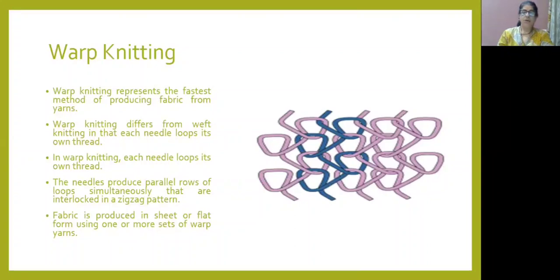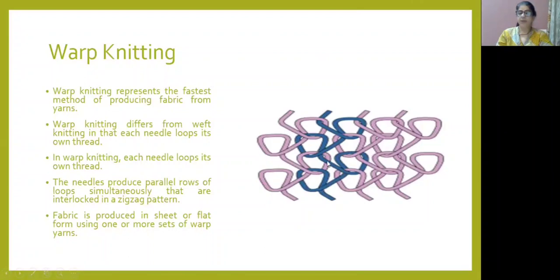The yarns are made into loops, interlocked by zigzag motion, interlocked by fabric construction. There are many yarns, each yarn moving in a vertical direction — in the wales direction — with a zigzag motion. The yarns undergo zigzag motion through loops and interlocking, and then the fabric is produced.